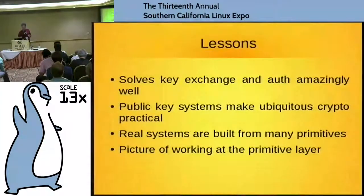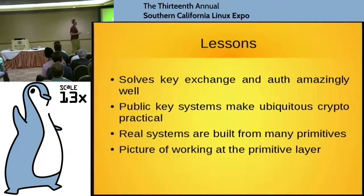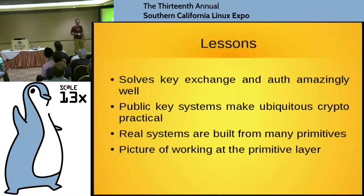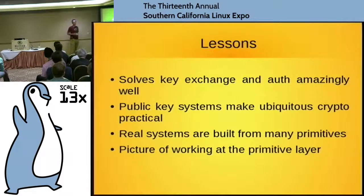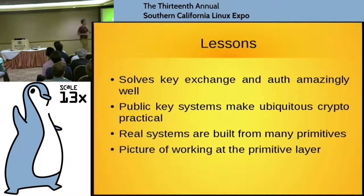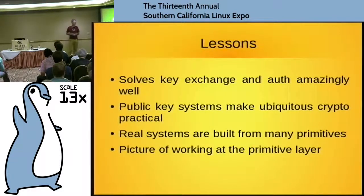So what are the lessons? Public key cryptography solves key exchange and authentication amazingly well. We do things with cryptography that we didn't imagine doing without it. It's kind of odd that these things date to the mid-70s — it just transforms what you can do. This is the only way to have ubiquitous cryptography. The other thing is I thought it would be nice to give you a picture of what real systems do: build from many primitives working carefully together, and to see what that primitive layer looks like.